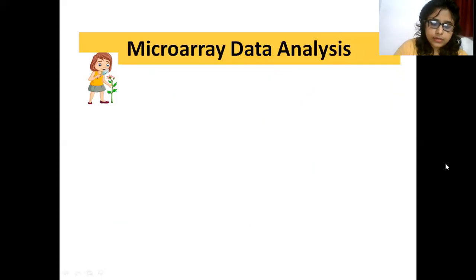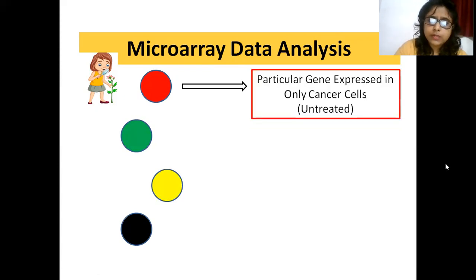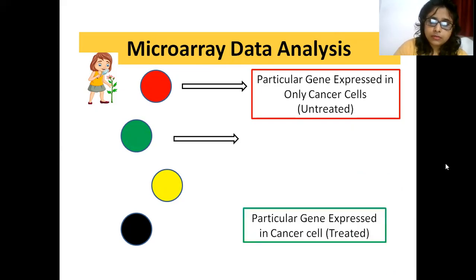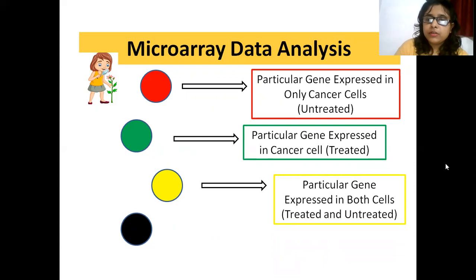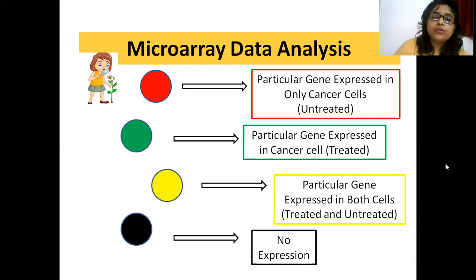We get results as four different colors: red, green, yellow and black. Every color has its own significance. Red color indicates particular gene expressed in only cancer cells when treated with carbon quantum dots. Yellow color shows us particular gene expressed in both cells treated as well as in untreated. Black color denotes no expression.